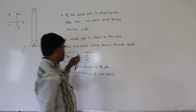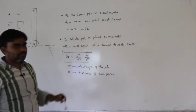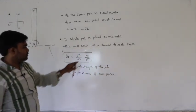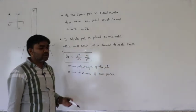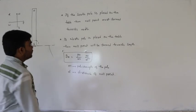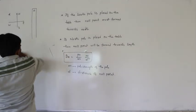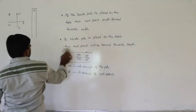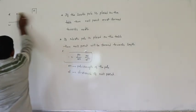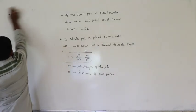Therefore BH = μ₀/4π × m/d², where small m is the pole strength. This is one more position of the null points.